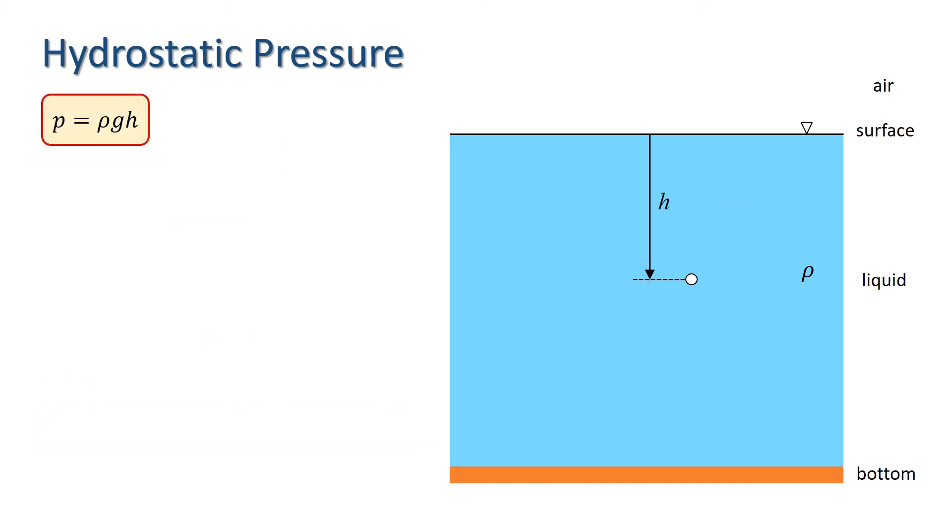This is an important result because it means that the hydrostatic pressure depends only on the vertical distance of a point from the free surface of the liquid. This in turn means that if we have liquid in a container, the hydrostatic pressure doesn't depend on the shape of the container or the volume of fluid in it. It depends only on the density of the liquid, the water depth, and of course the acceleration due to gravity.